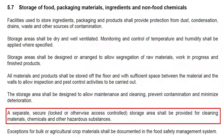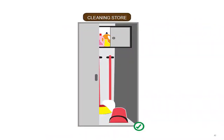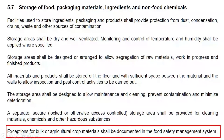Products should be off the floor and away from the wall — use racks or pallets so cleaning, maintenance, and pest monitoring activities can be carried out easily. A separate and secure storage area shall be provided for cleaning items and cleaning chemicals; if a dedicated room is not possible, designate a locked cabinet. Exceptions for bulk or agricultural crop material shall be documented in the food safety management system — this is purely a documentation requirement.